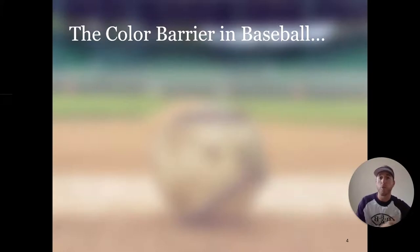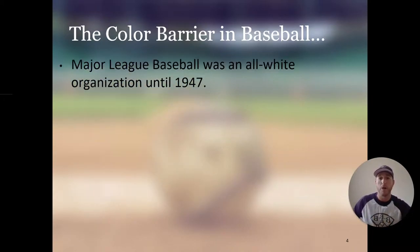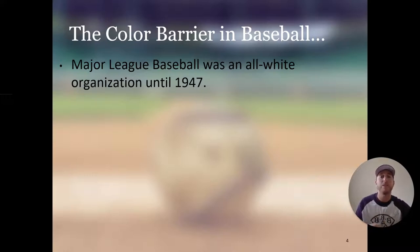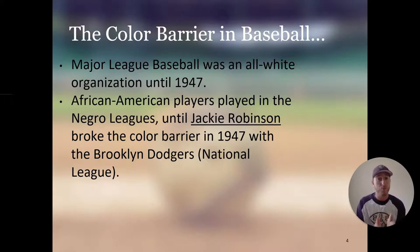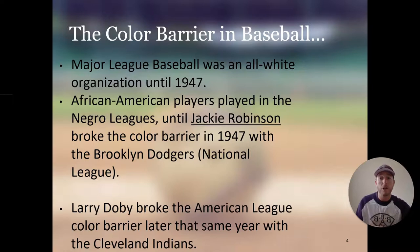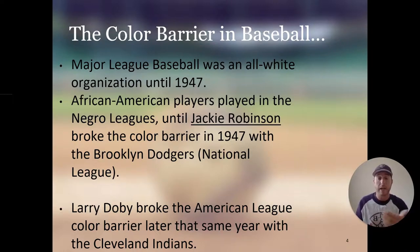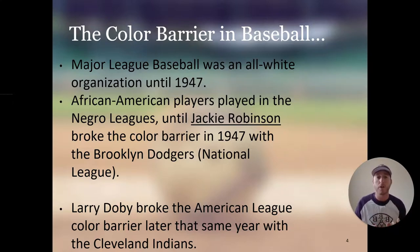One of the biggest milestones in all of baseball was the color barrier. Major League Baseball was an all-white organization until 1947. African-American players played in the Negro Leagues until Jackie Robinson — I hope you know who Jackie Robinson is — broke the color barrier in 1947 with the Brooklyn Dodgers in the National League. Not too many people know this, but Larry Doby broke the American League color barrier later that same year with the Cleveland Indians. Both Robinson and Doby broke the color barrier in 1947.